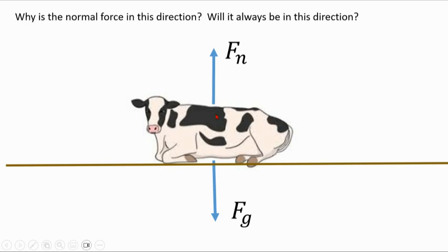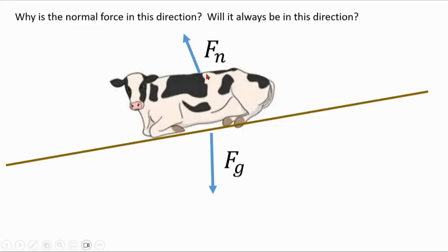So the normal force pushes straight up on the cow because the surface of the earth at this point is flat, and the normal force is perpendicular to the surface. If the cow were to be on an incline, the normal force would not be flat. Instead, it would be perpendicular to the surface, which means it would tilt as well.